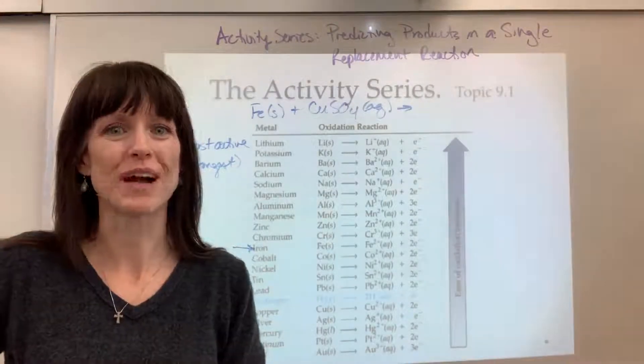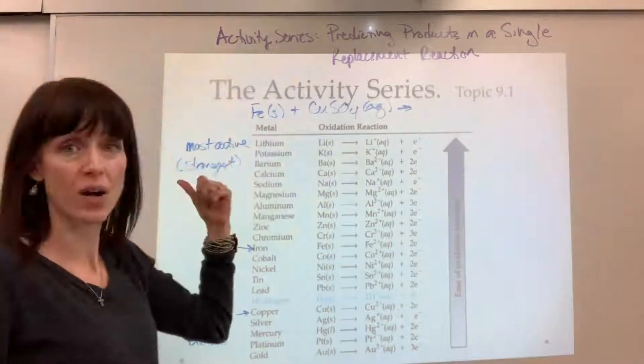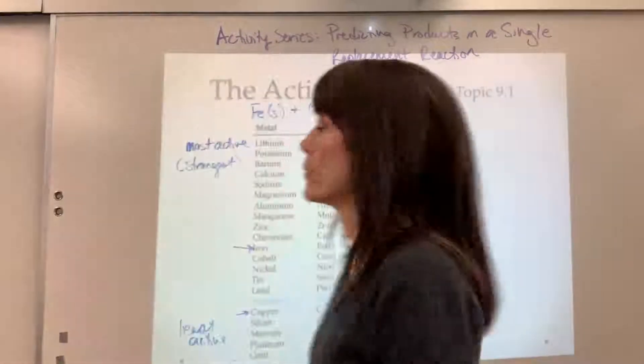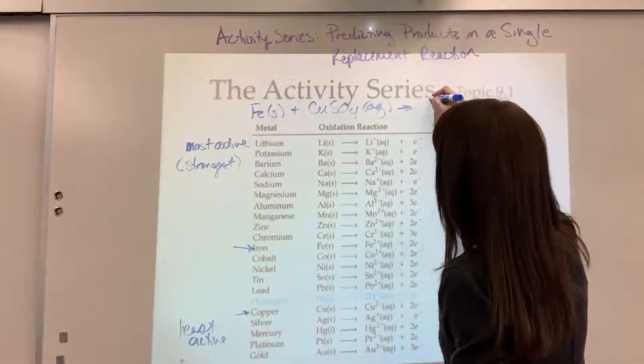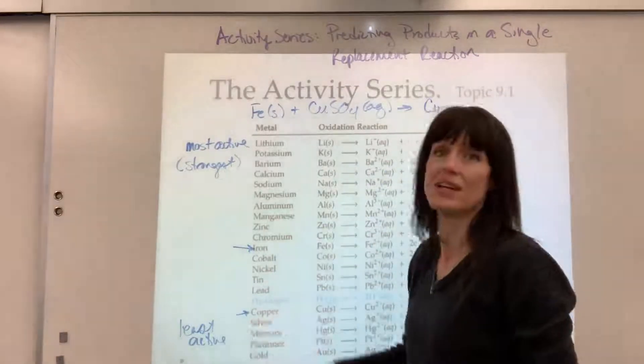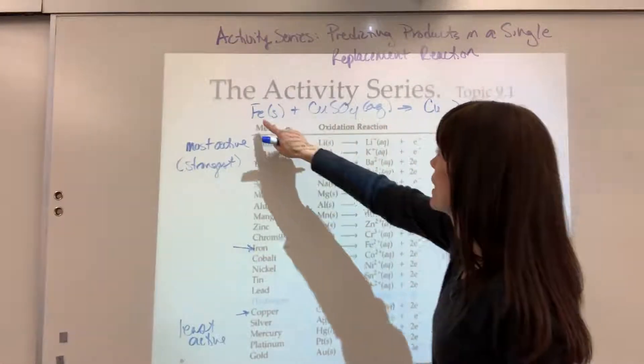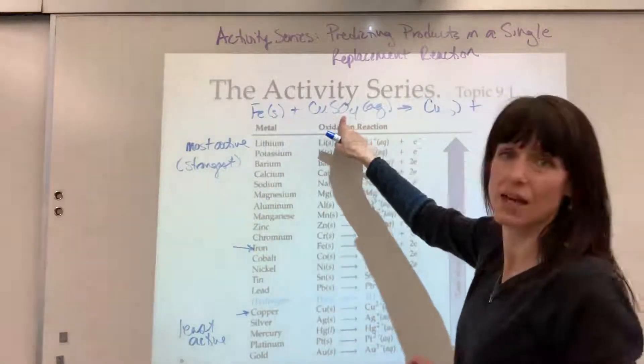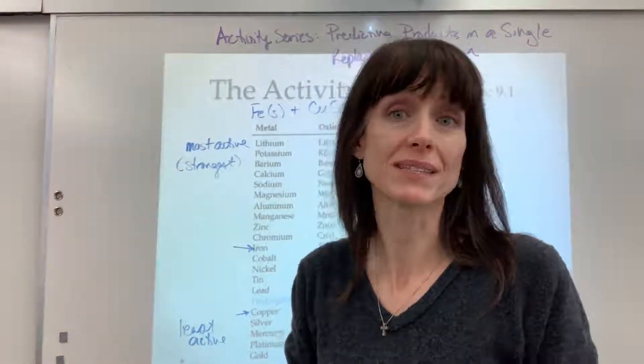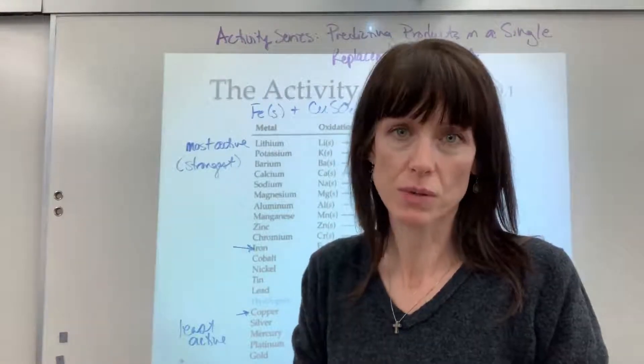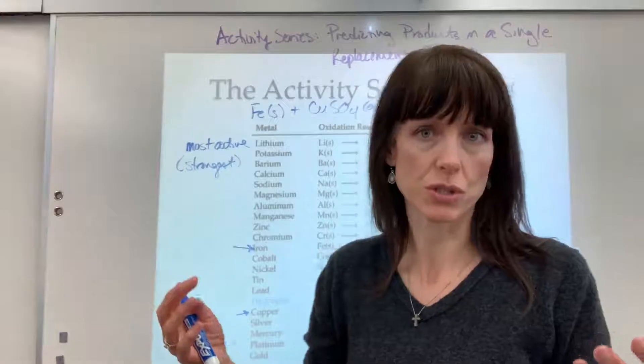Which one's stronger, which one's more active? The iron is. Which means the iron has the ability to kick that copper off. So we are going to switch places with those two metals. The copper, because it's less active, is going to be by itself as the solid, plus now the iron will be with that sulfate. We really should have been told what the charge would be on the iron because it can have multiple oxidation numbers. If you're not told, the most common oxidation number is +2, so assume it's a 2.